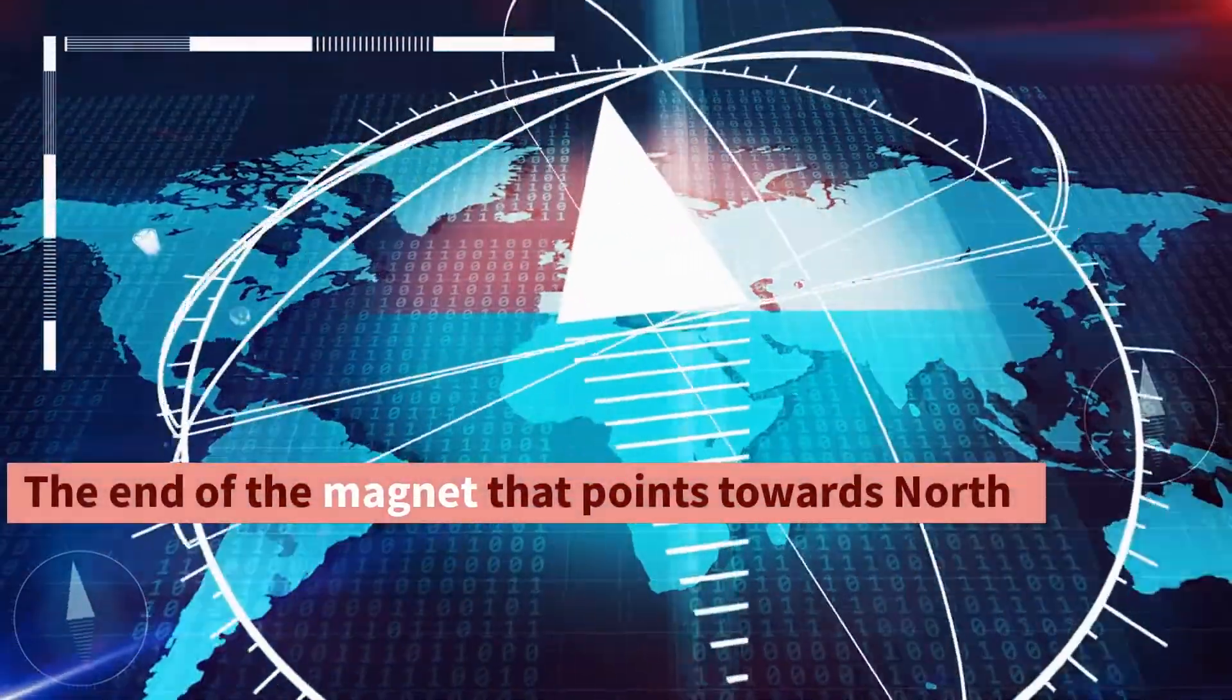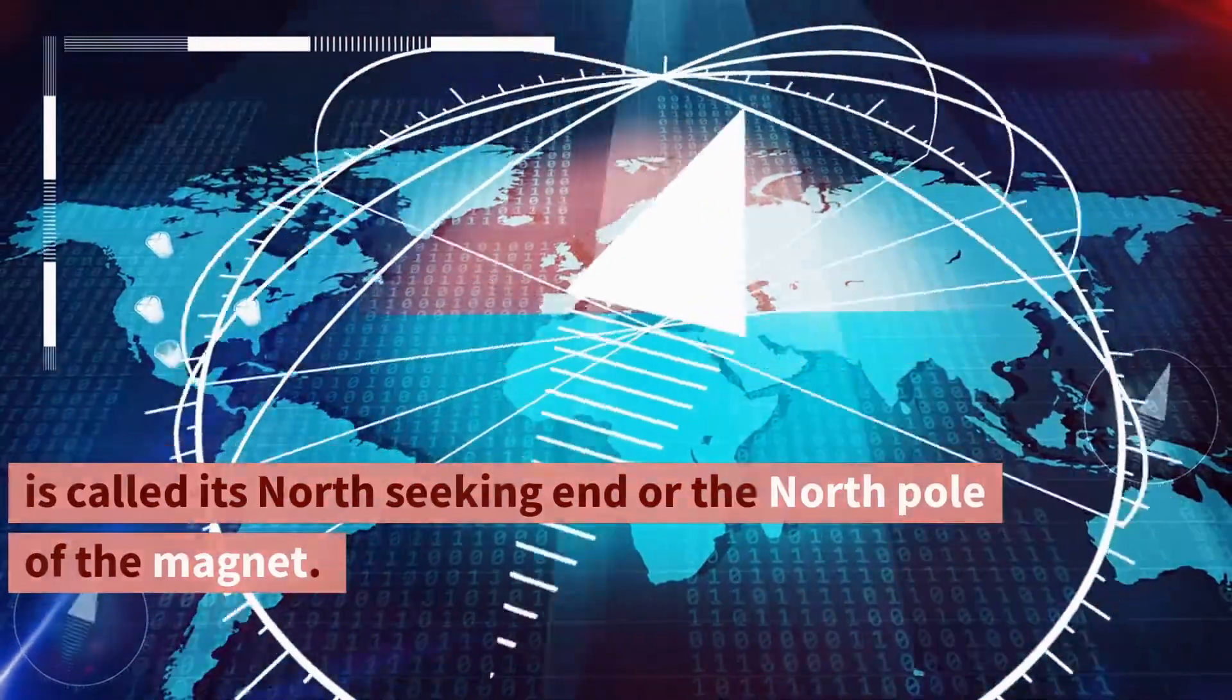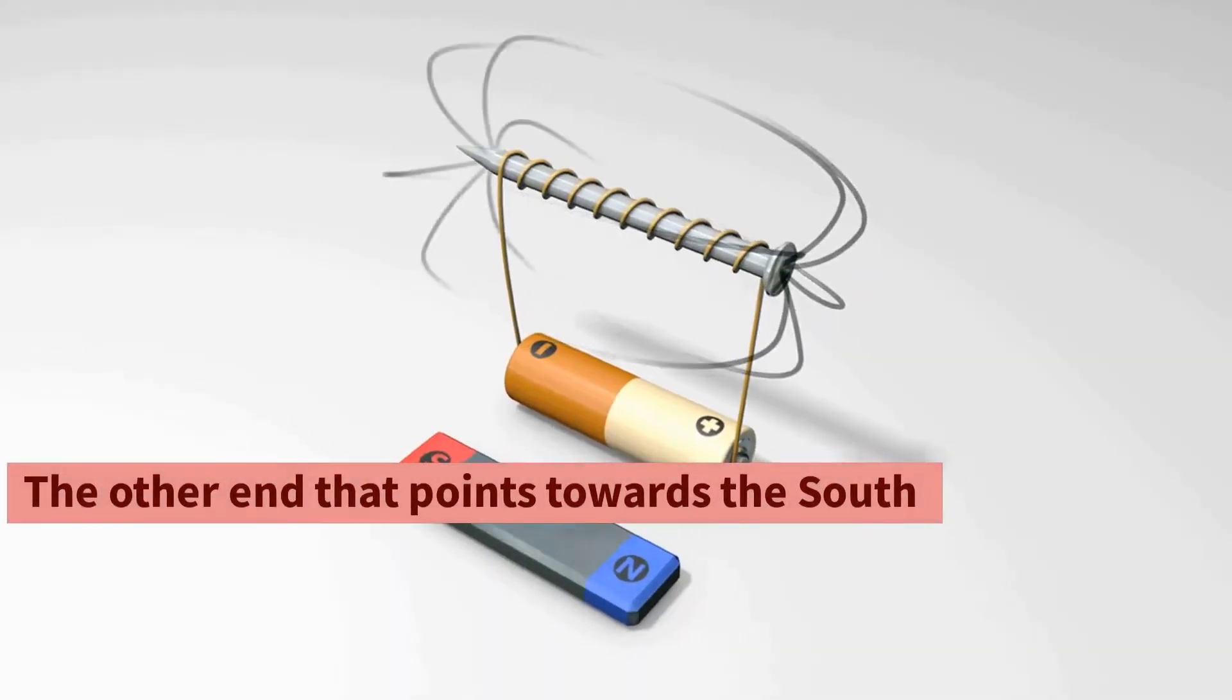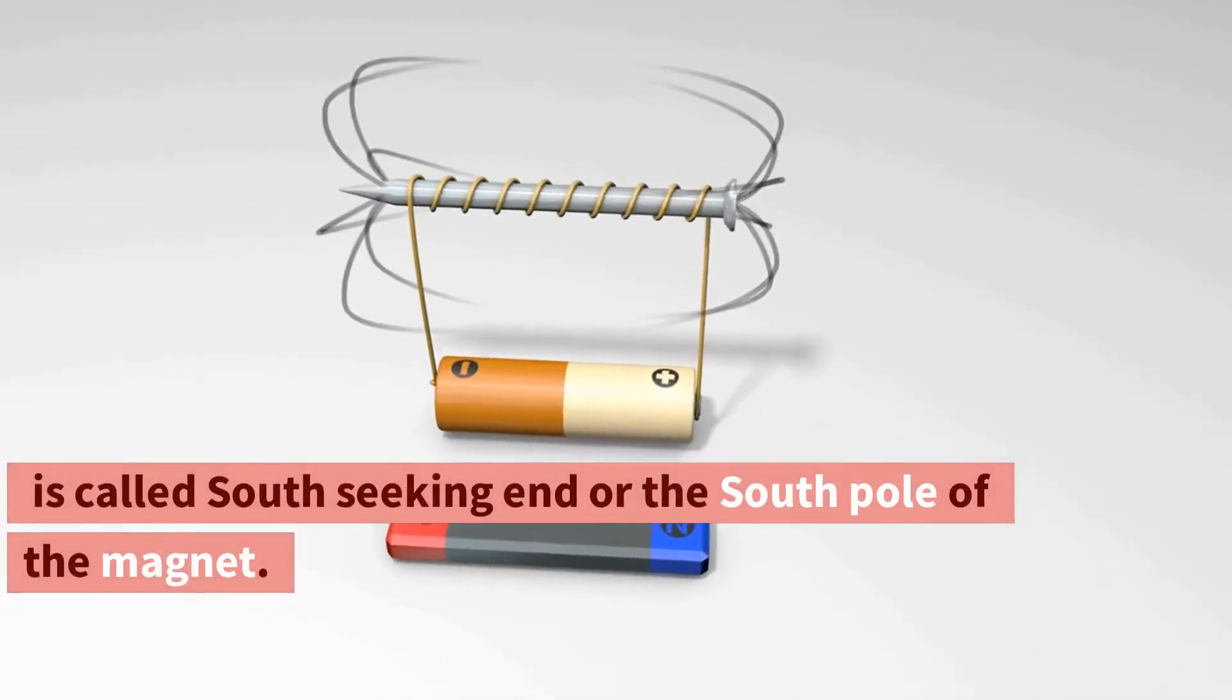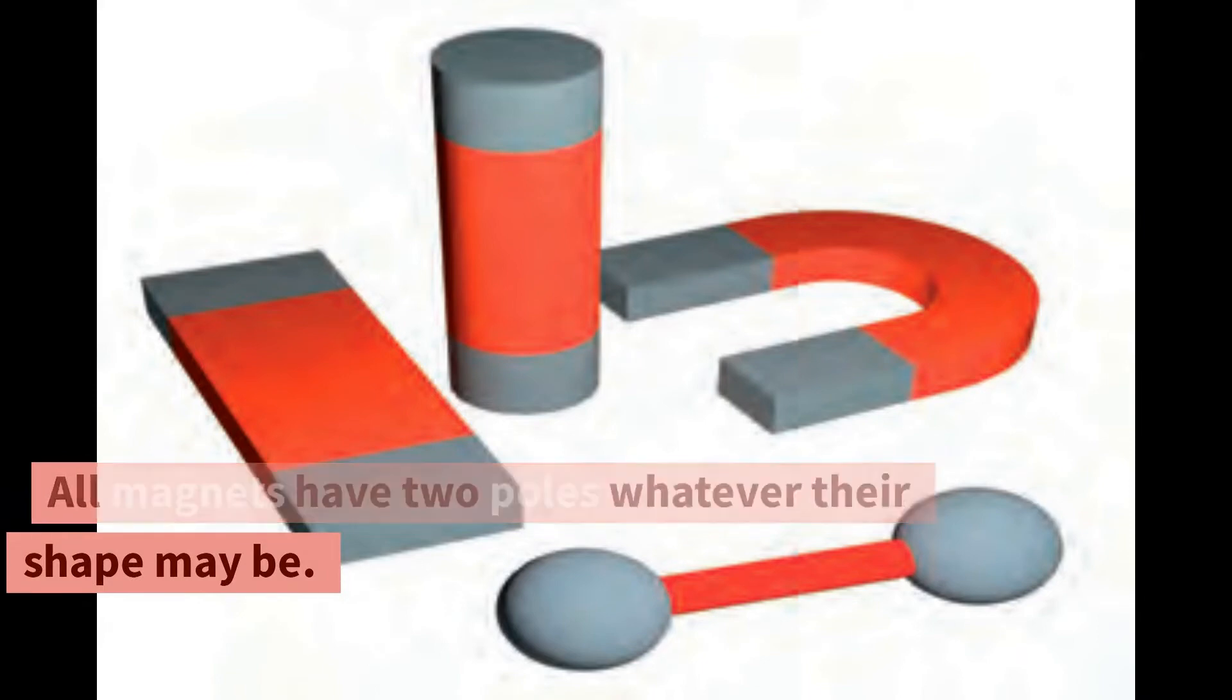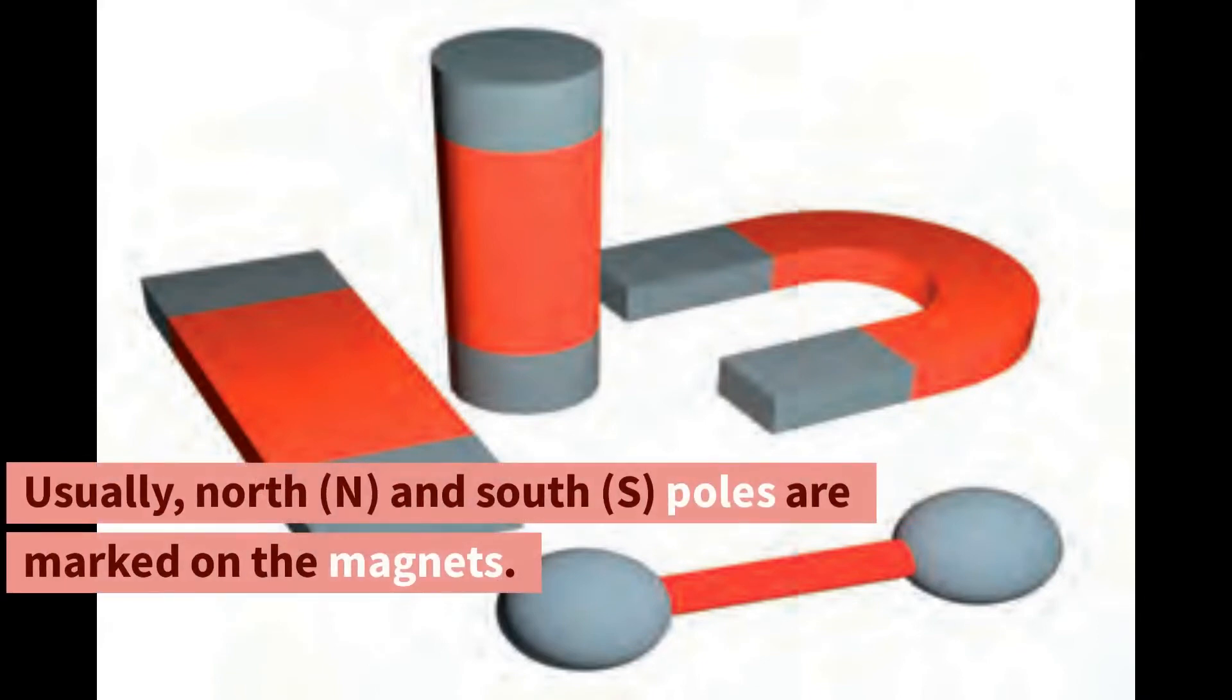The end of the magnet that points towards north is called its north-seeking end or the north pole of the magnet. The other end that points towards the south is called south-seeking end or the south pole of the magnet. All magnets have two poles whatever their shape may be. Usually, north (N) and south (S) poles are marked on the magnets.